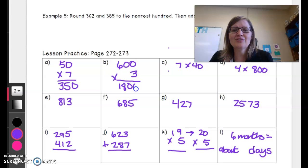This one I could write it out but I'm going to do it mentally. 7 times 40, I know that 7 times 4 is 28 and then I just put on the zero.